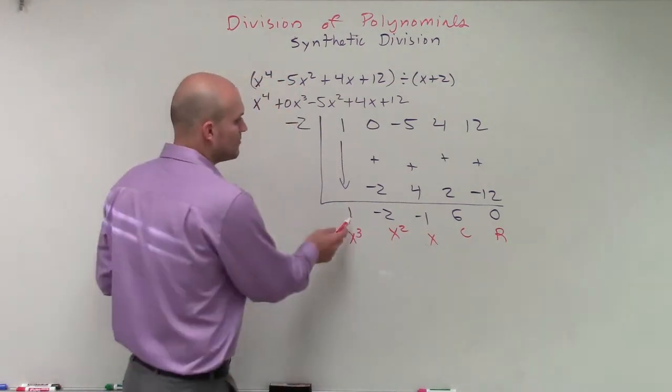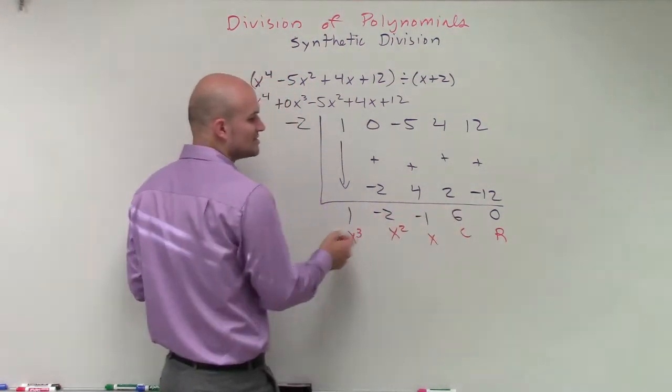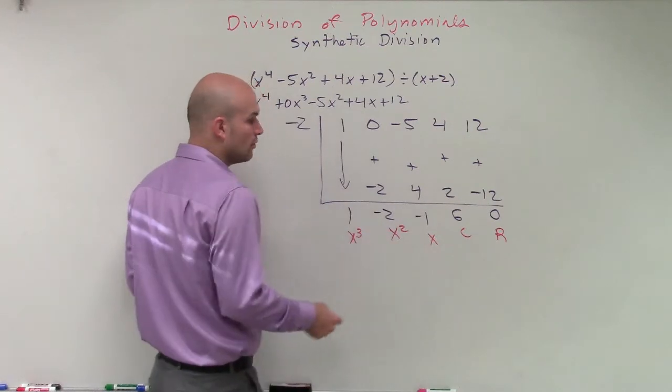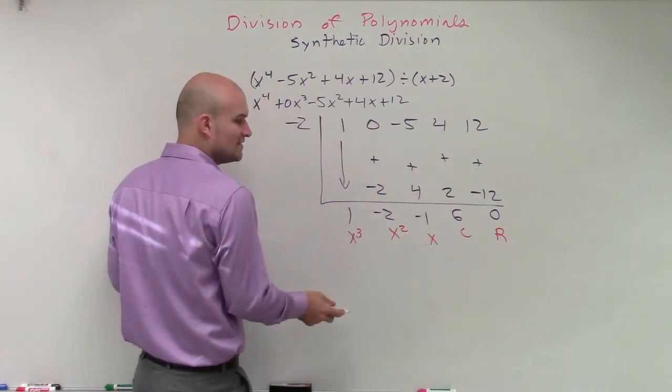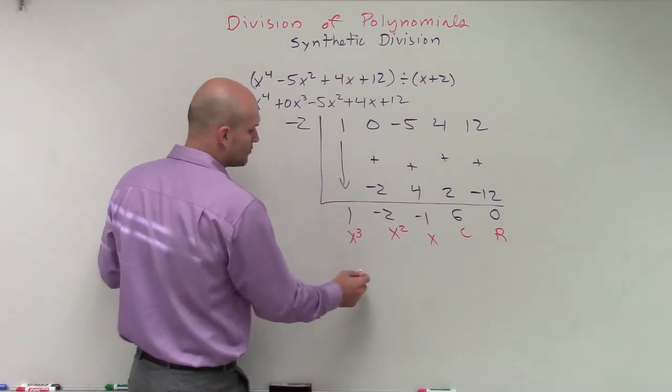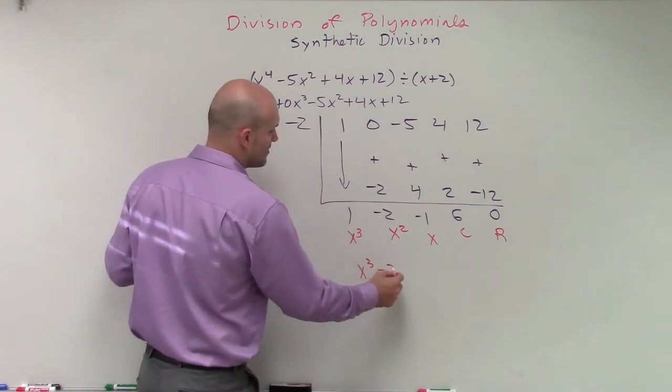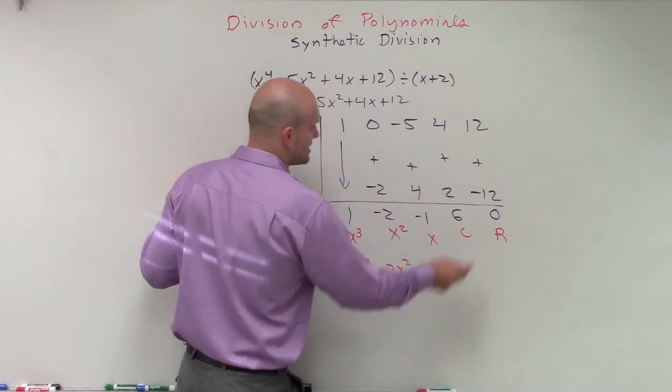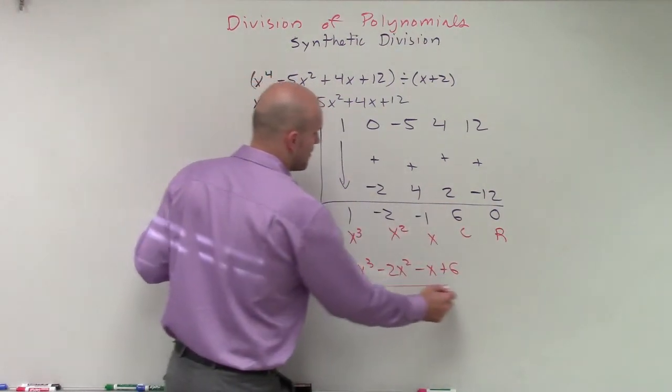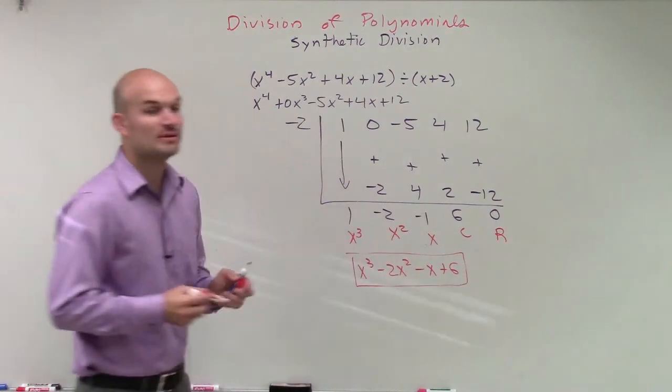Therefore, the quotient for this problem, remember, these are going to be your coefficients and your constant for your quotient. So I'm just going to take my purple marker and write it as the coefficient of each one of these terms. So my quotient will be x cubed minus 2x squared minus x plus 6. And since I have a remainder of 0, that will be my final answer.